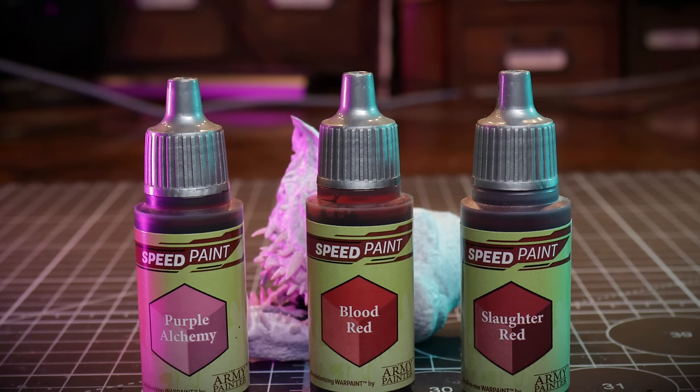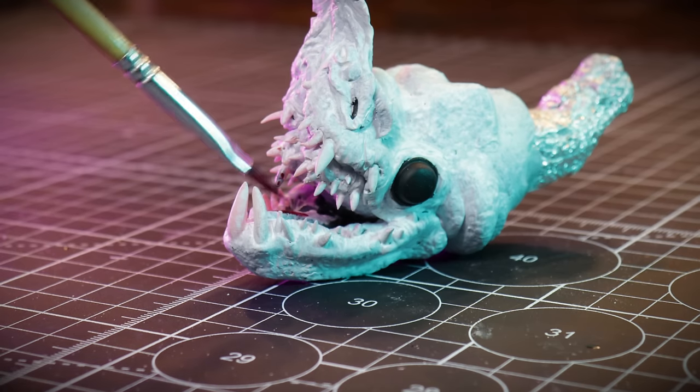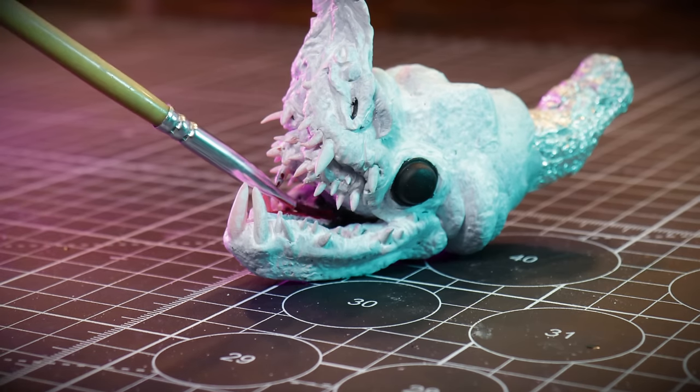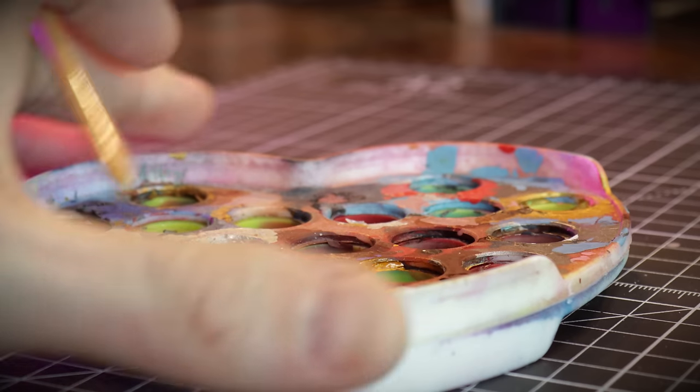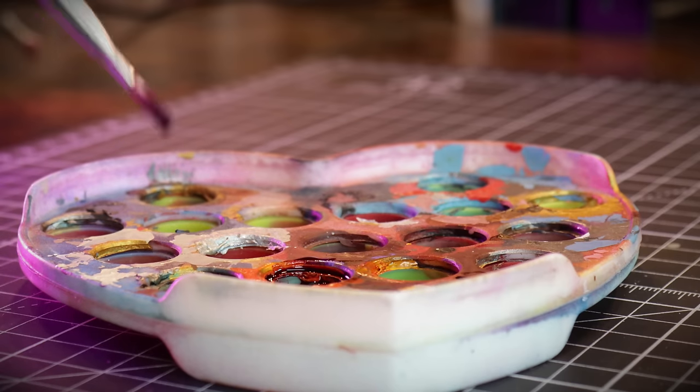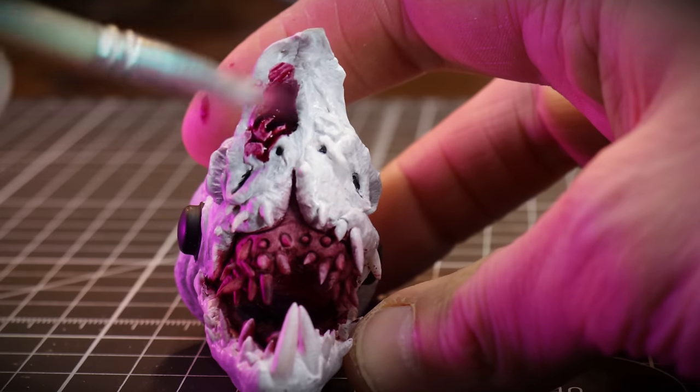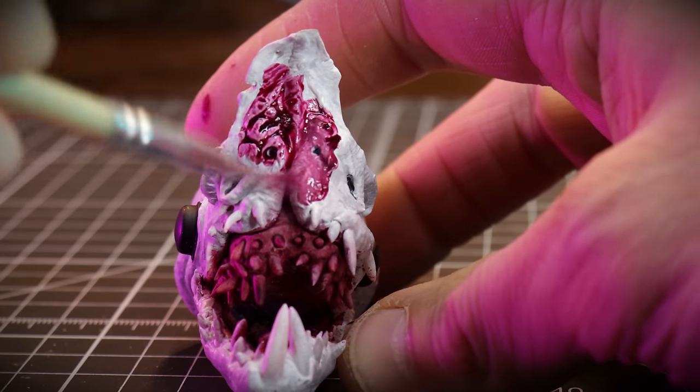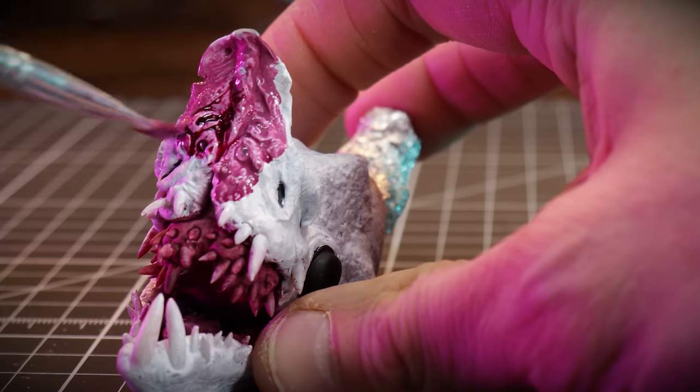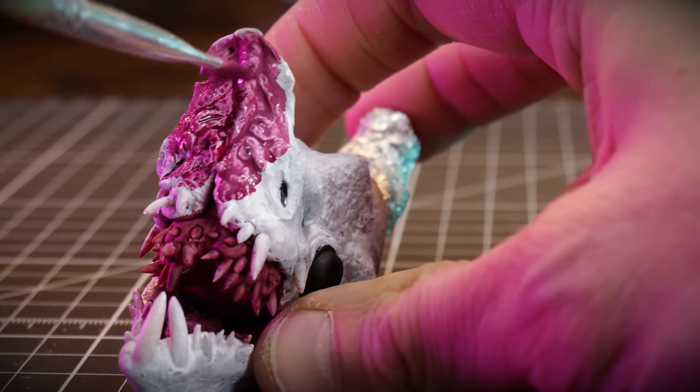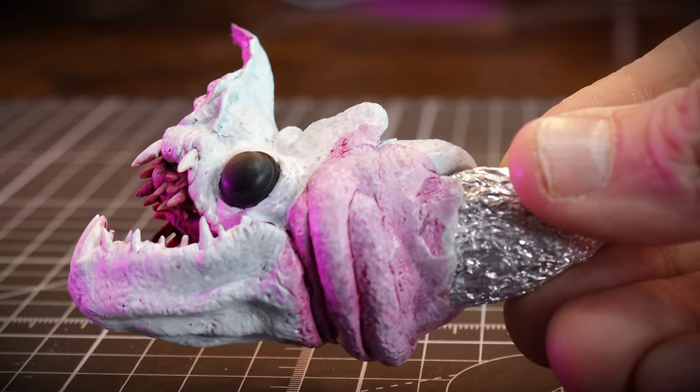I've painted this bat face white because I want to use some speed paints. The first series of speed paints, Army Painter, if you're listening, I'd love the next set, drop me a line. But these ones do reactivate with water, which is not great sometimes. But when you want to blend colors, which is what I'm hoping to do on this fleshy bat thing, it works pretty well. Who am I kidding, nobody from Army Painter is watching this.